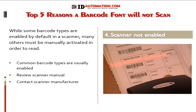The barcode type or symbology is not enabled in the scanner. While some barcode types are enabled by default in a scanner, many others must be manually activated in order to read. Make sure that the barcode scanner is configured to read the type of barcode that you are attempting to read. If you have confirmed that the scanner is programmed to read the barcode type and it still does not recognize the barcode, contact the scanner manufacturer.